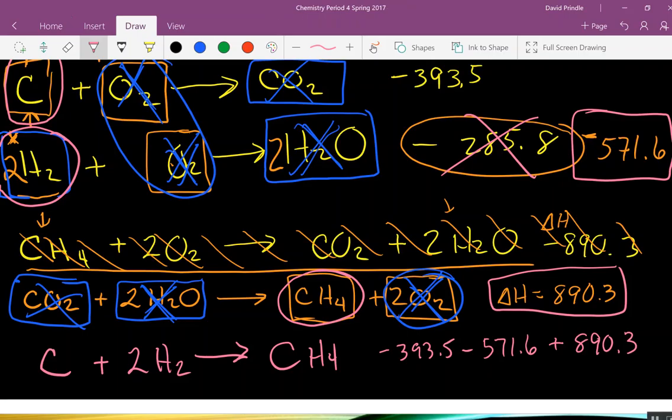You could start with an 890 and subtract the rest off. What do you get? So, the delta H for this reaction is a negative 74.8 kilojoules per mole. There we go.